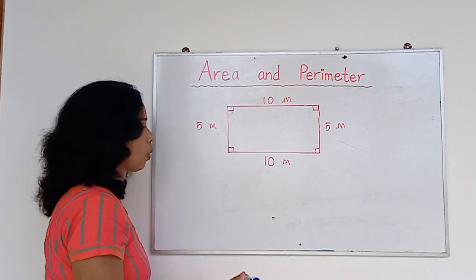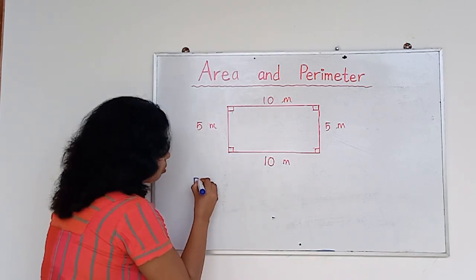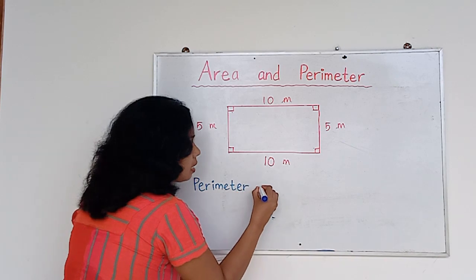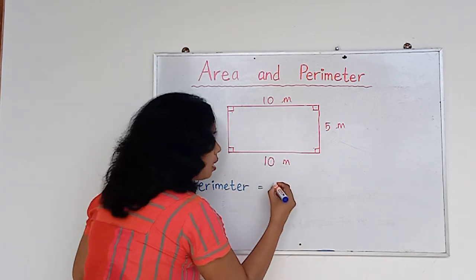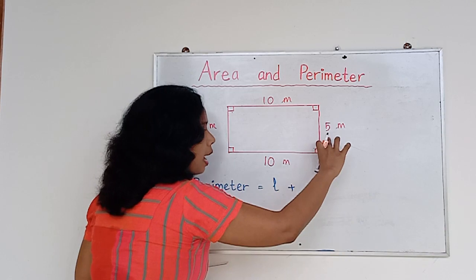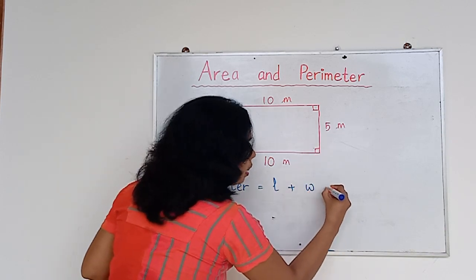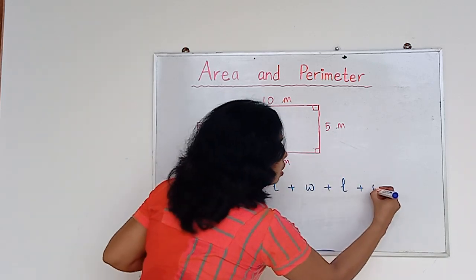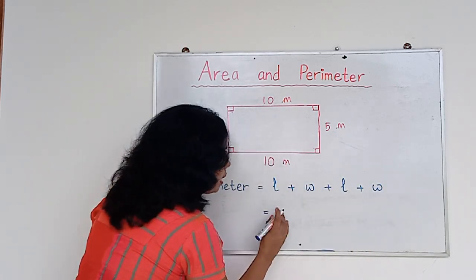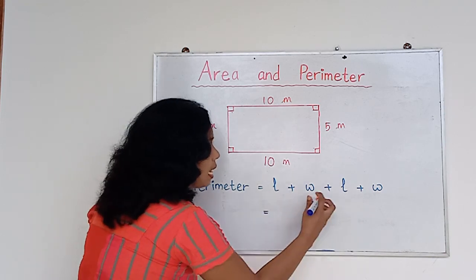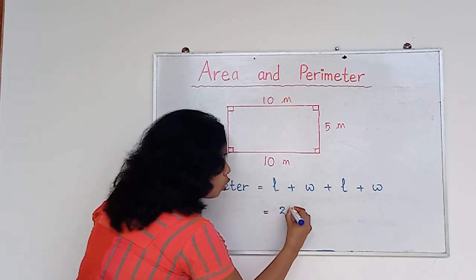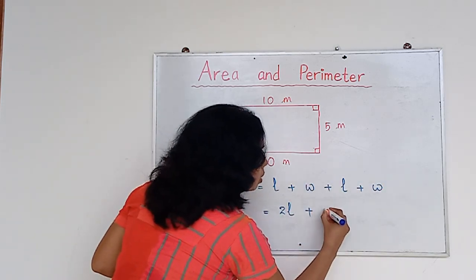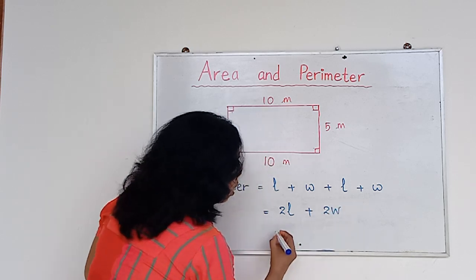So perimeter is: length plus width plus length plus width. I can write this as: L plus L is 2L, and width plus width is 2W. So I can write it as 2 times (L plus W). According to this formula, what will be the perimeter of my land? L is 10, W is 5, so it is 2 times (10 plus 5), which is 2 times 15, that is 30.